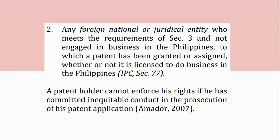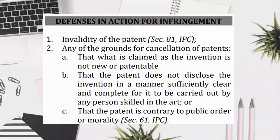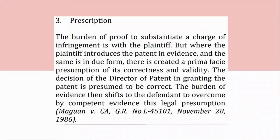Defenses in action for infringement: (1) invalidity of the patent, Section 81, IPC; (2) any of the grounds for cancellation of patents: (a) that what is claimed as the invention is not new or patentable, (b) that the patent does not disclose the invention in a manner sufficiently clear and complete for it to be carried out by any person skilled in the art, or (c) that the patent is contrary to public order or morality, Section 61, IPC; (3) prescription. The burden of proof to substantiate a charge of infringement is with the plaintiff. But where the plaintiff introduces the patent and evidence, and the same is in due form, there is created a prima facie presumption of its correctness and validity. The decision of the director of patents in granting the patent is presumed to be correct. The burden of evidence then shifts to the defendant to overcome by competent evidence this legal presumption. May 1 v. CA, GR No. L-45101, November 28, 1986.